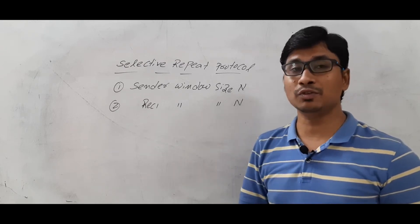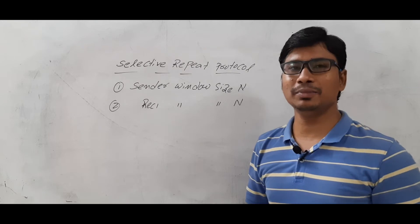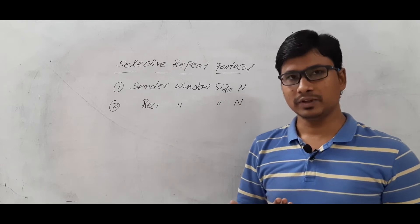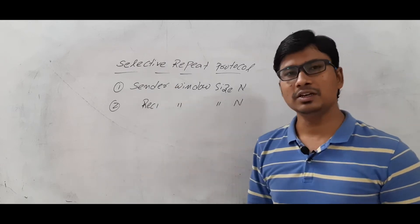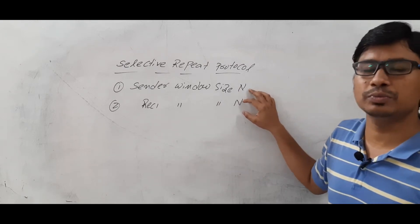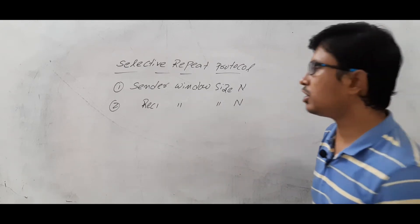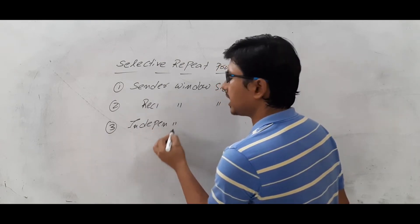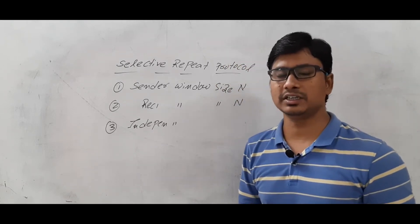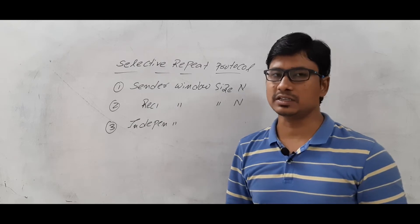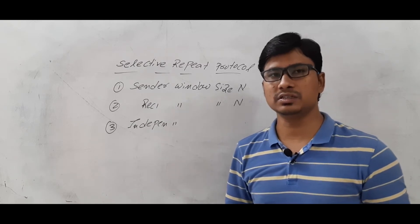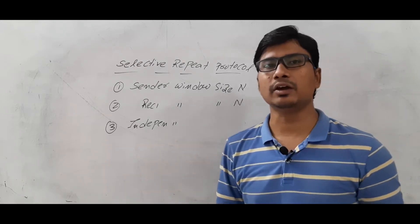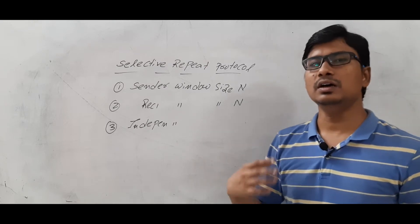The window sizes should not be equal to 1 — if they are equal to 1, it becomes Stop-and-Wait protocol. So the value of n should be greater than 1. Selective Repeat uses the independent acknowledgement strategy, whereas Go-Back-N uses the cumulative acknowledgement strategy.